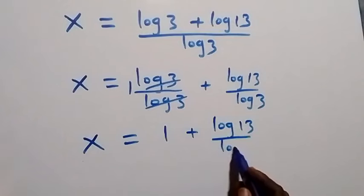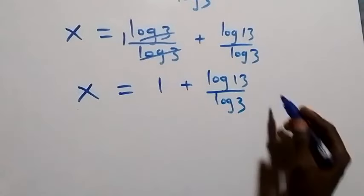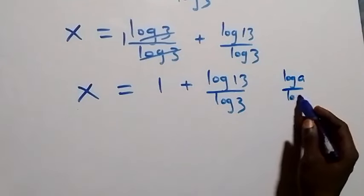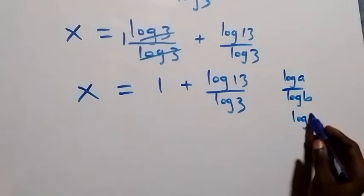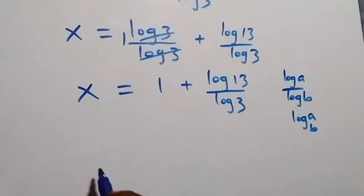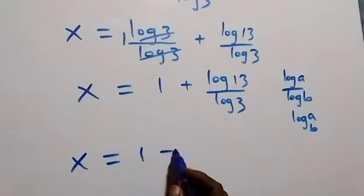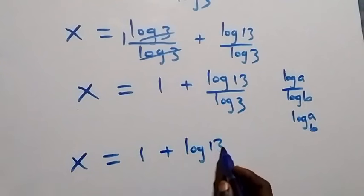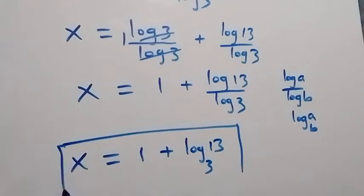Also from here, when we apply the change of base formula — log a over log b can be written as log a to base b — then what we have becomes x equals to one plus log thirteen to base three. So here we have the value of x in this problem.